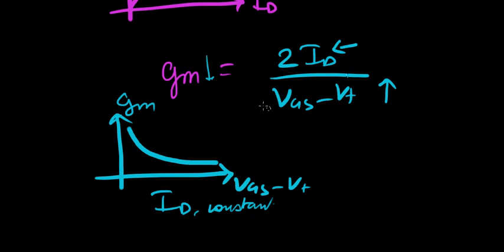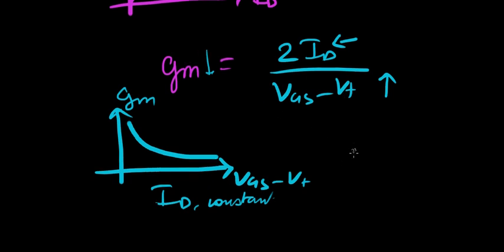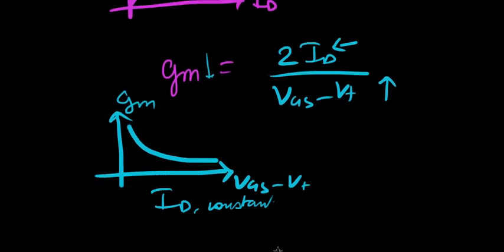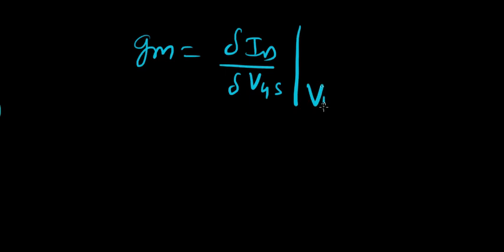So that is the reason we look at various forms of GM. I will write all those forms again so that you can note it down. Oh we're out of paper here but let me, okay. Alright so let me write down the different forms of GM that we've looked at today. Delta ID over Delta VGS is the most basic form of it when VDS is constant.